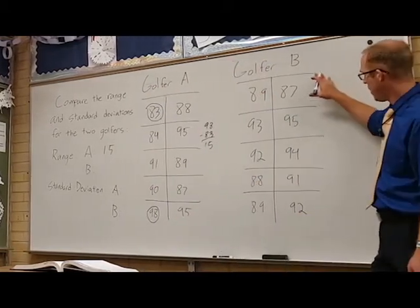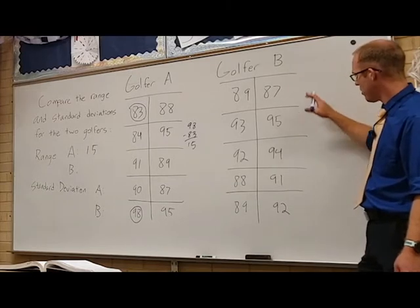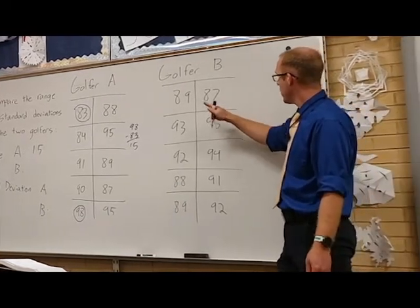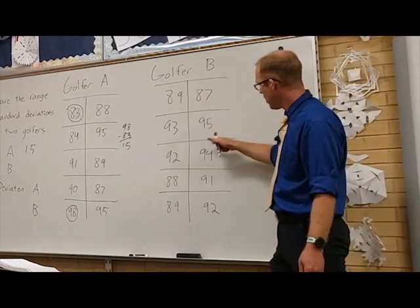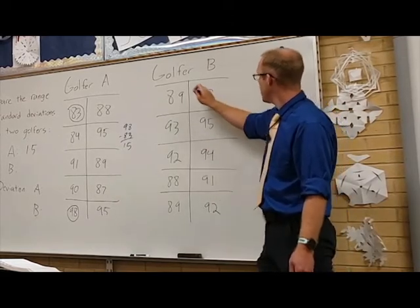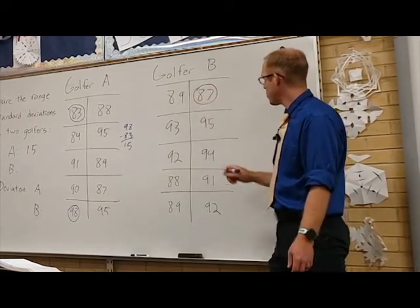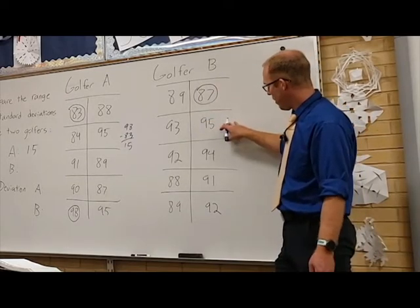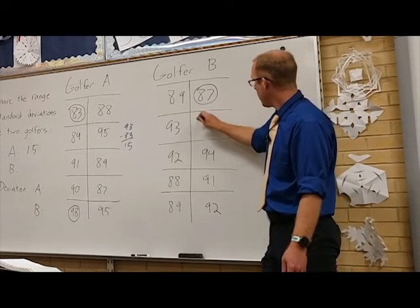Let's talk about golfer B now, finding his largest and smallest. It looks like 87 is our minimum, our smallest value, and our largest is 95.